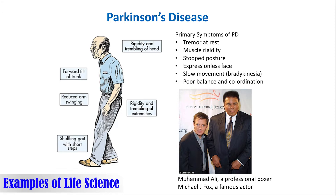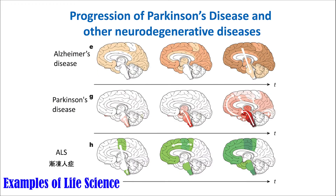Here is an example of a neurodegenerative disease called Parkinson's disease. The primary symptoms of this disease are that the patients are tremoring at rest, their muscle is rigid, they have stooped posture, expressionless faces, slow movement, poor balance, and coordination. Many famous people have Parkinson's disease, including Mohamed Ali, a professional boxer, and Michael J. Fox, a famous actor. This slide demonstrates the progression of defective neuronal cells in the brain of patients with Parkinson's disease and other neurodegenerative diseases.